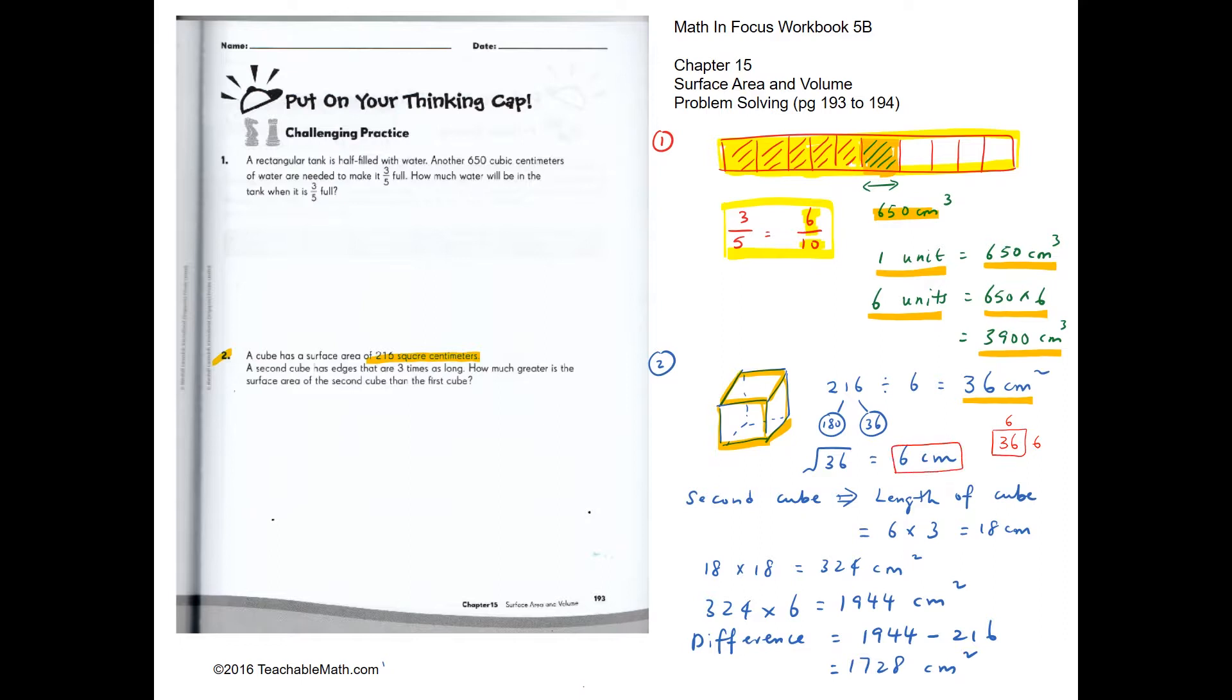We know that for a second cube, the edges are three times as long, so it will be 18 cm long. So now we have a cube and it's 18 by 18. If it is 18 by 18, the area will be 324 cm squared. And we have 6 of these. So therefore the new surface area would be 1,944.